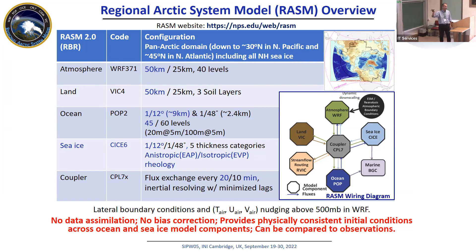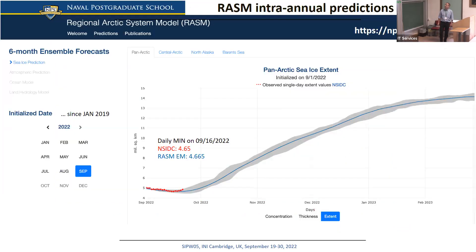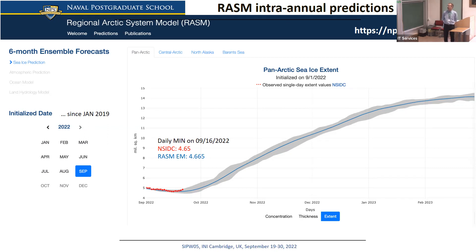Let me advertise our operational capability. There is a publicly available website — not just for the Navy. If you go to the September 2022 initialized forecast, the model ensemble mean based on 31 ensemble members is shown in blue. We started on September 1 and forecast through the end of September 2023 — now six months' forecast every month, with roughly 30 ensemble members. The red dots are actual observations from NSIDC, updated on a daily basis.